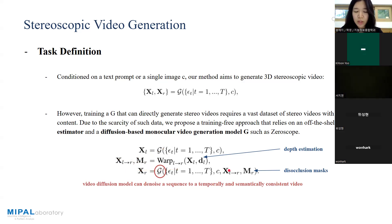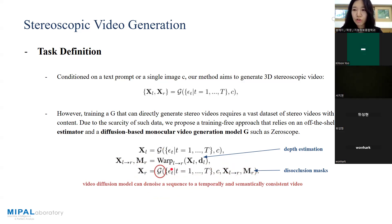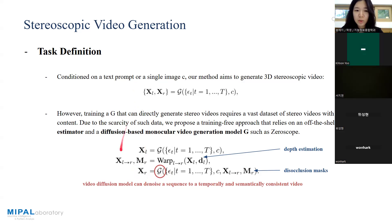두 번째 과정을 거친 후, 다시 제너레이션 모델을 사용해 Right View 비디오를 생성합니다. Left에서 Right로 옮긴 중간중간 픽셀이 빈 비디오와 텍스트 프롬프트, 타임 스텝, Disocclusion Mask를 이용해서 Disocclusion Mask에 해당하는 부분을 제너레이션 모델이 채울 수 있도록 해서 Right View 비디오를 생성합니다.